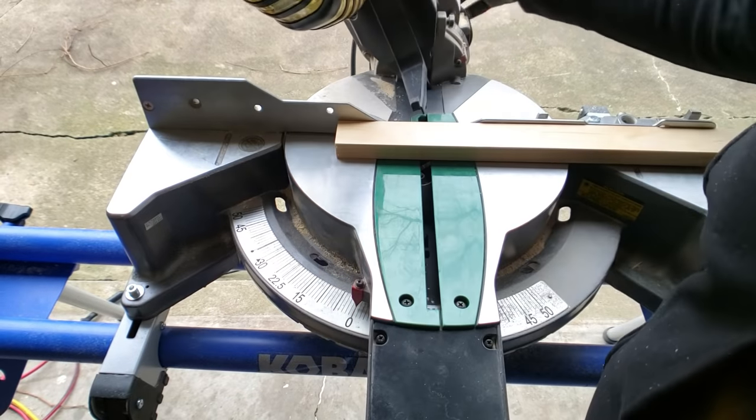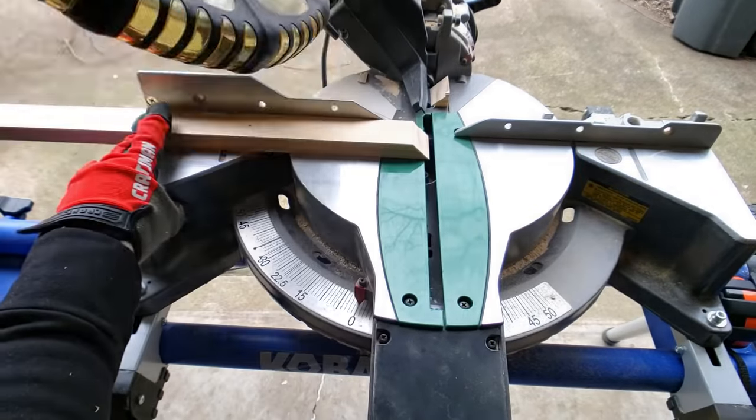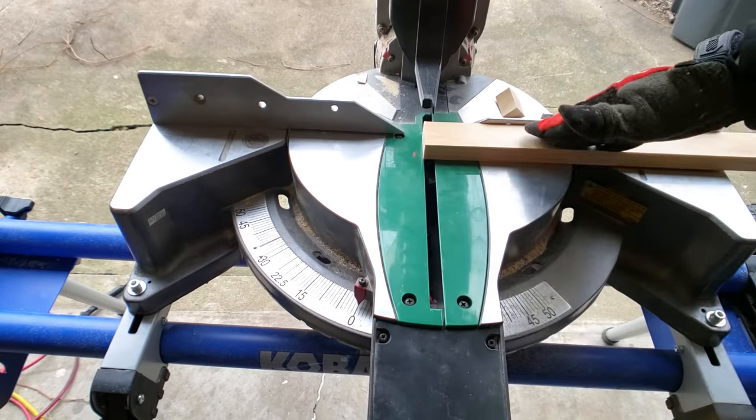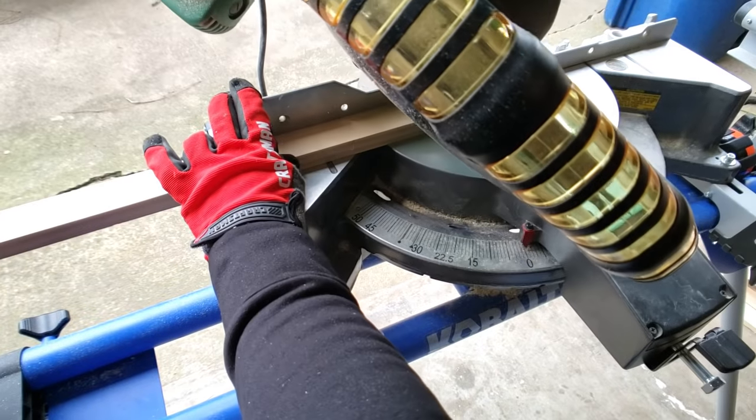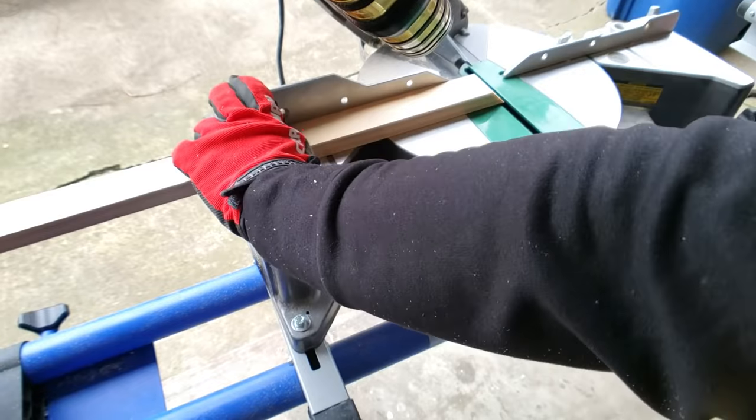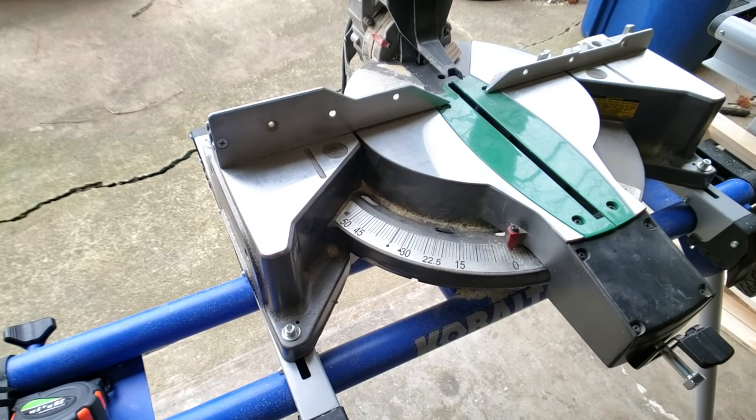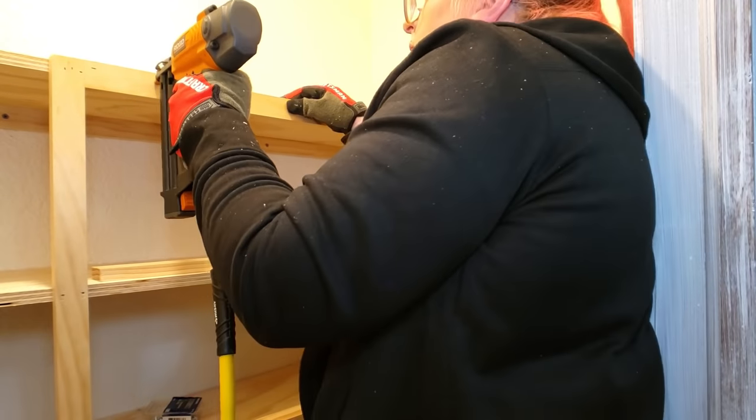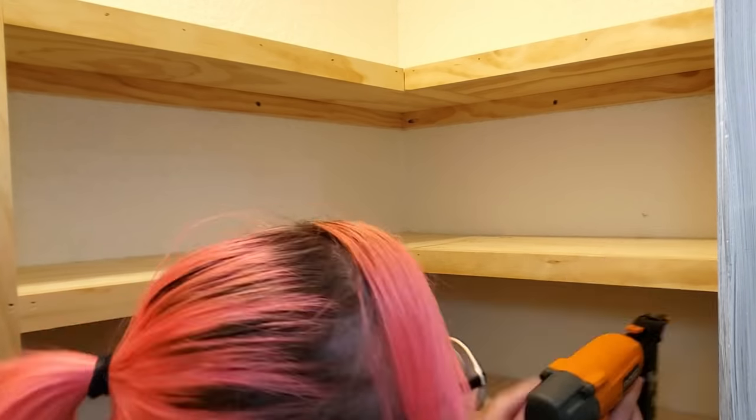For the shelf facings, I needed one flat edge to go against the support bar and one mitered edge for the inner corner. The side pieces are the same with a mitered edge on one side that will fit into the corner and a flat edge on the other that will sit against the wall. Once I had all of those pieces cut, I used my nail gun to secure them to the front face of all of the shelves.